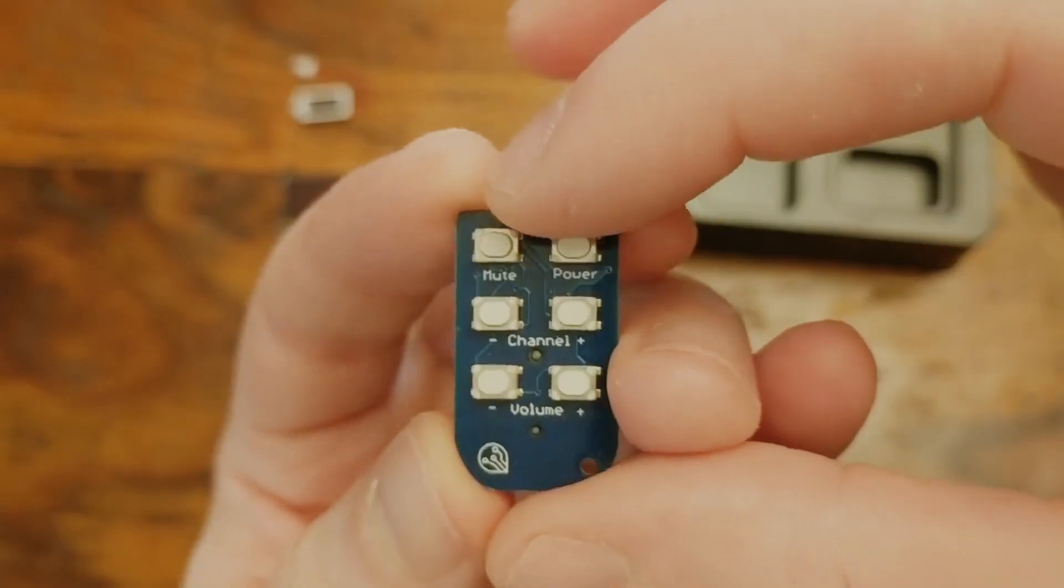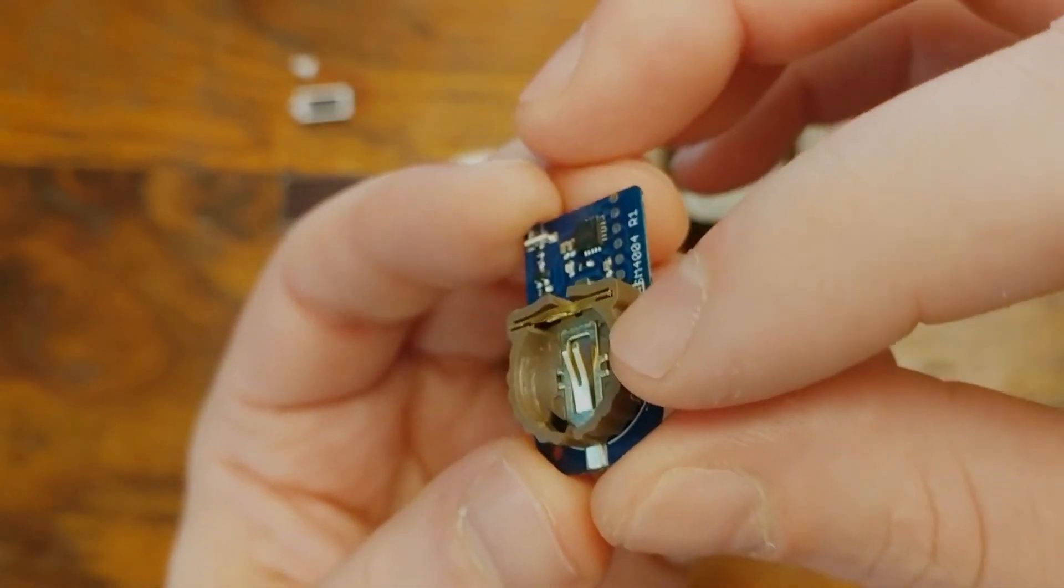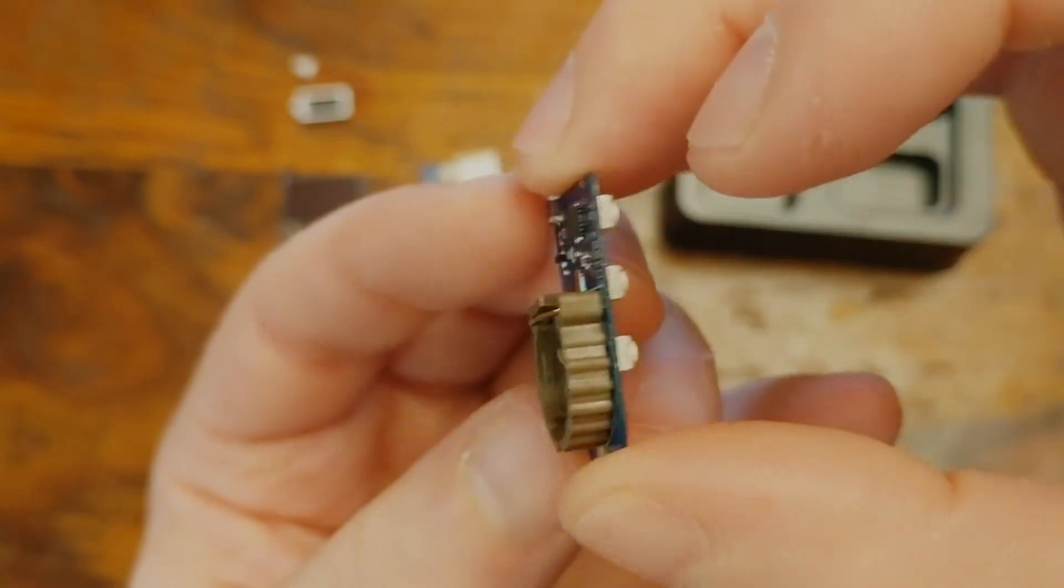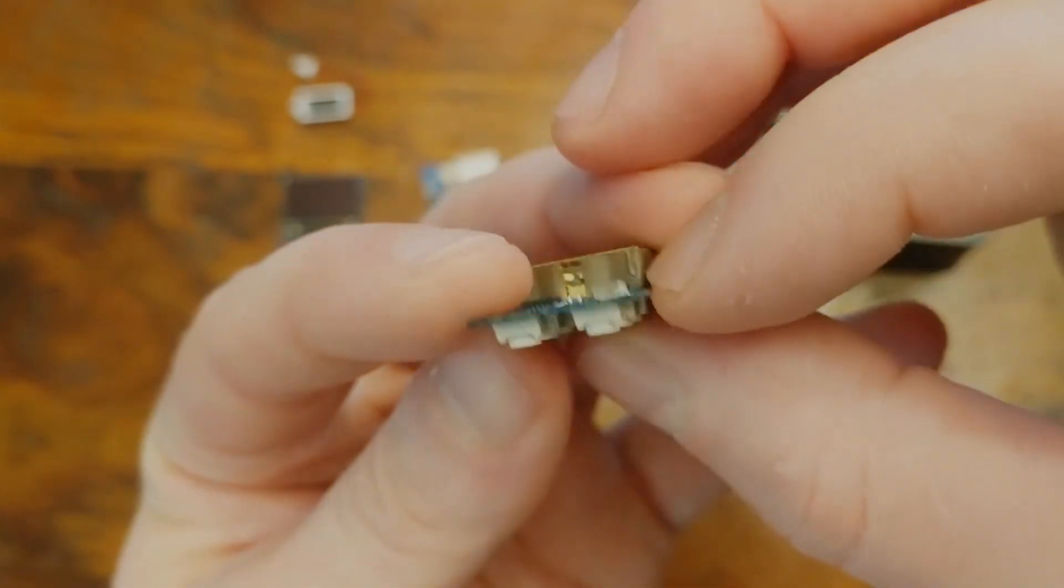Speaking of the remote, this is what it looks like. It has a little button cell battery holder here, some typical TV remote buttons, and a little IR transmitter to send the signals.